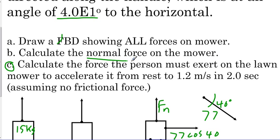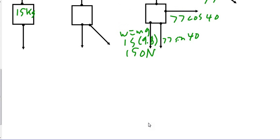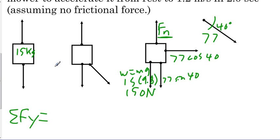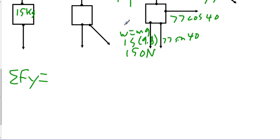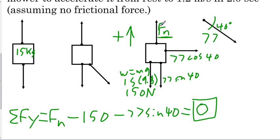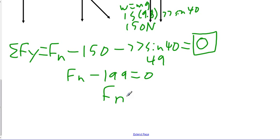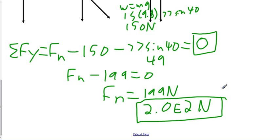Calculate the normal force on the mower — we're looking for Fn. We use the sum of the forces in the y, setting up as positive. So we have Fn minus 150 newtons minus 77 sine 40, and that equals zero. This tells us we are in vertical equilibrium — the lawnmower is not accelerating into the ground or up into the air. Working out 77 sine 40 gives us 49 newtons, which means Fn minus 199 equals zero, so the normal force equals 199 newtons. With two significant figures, that's 2.0 times 10 to the second newtons.